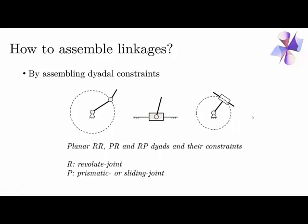For planar four-bar linkages, the three most commonly found diagonal constraints are: a circle constraint for an RR dyad; a fixed line constraint for a PR dyad, where P stands for prismatic or sliding joint and R stands for revolute joint; and for an RP dyad, the constraint is a line always tangent to a circle. In most scenarios the radius of that circle is zero, so the prismatic joint passes through the revolute joint, giving a swinging block configuration.